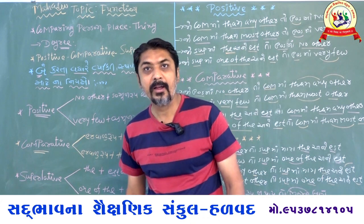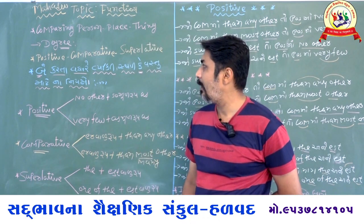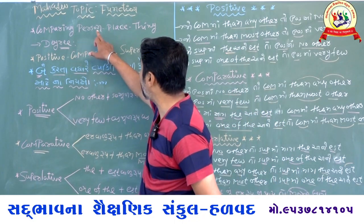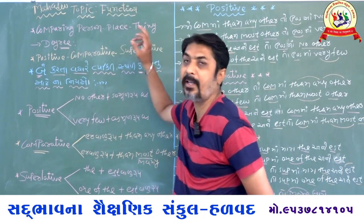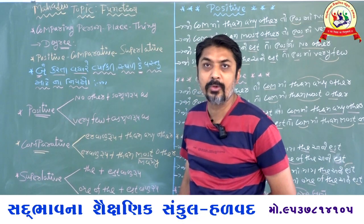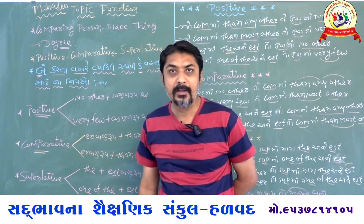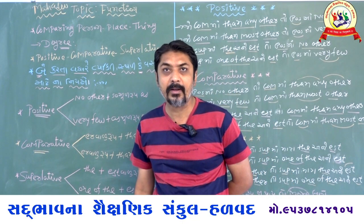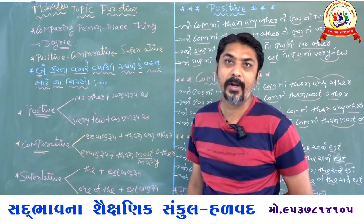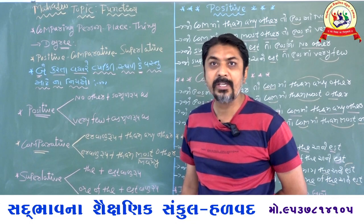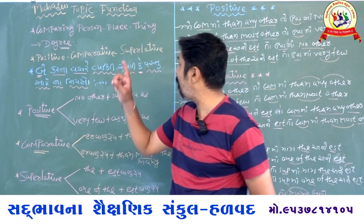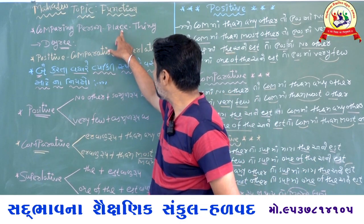Yesterday, we also took a function and the name of that function was 'Comparing Person, Place and Thing.' In the next lecture, we covered the comparing function — at the degree level, the third thing we discussed was positive, comparative and superlative.